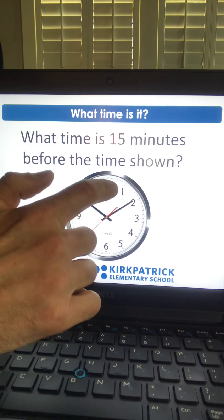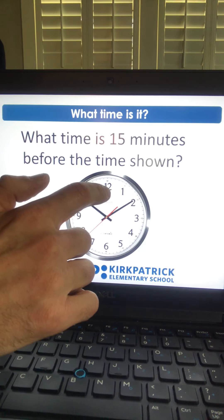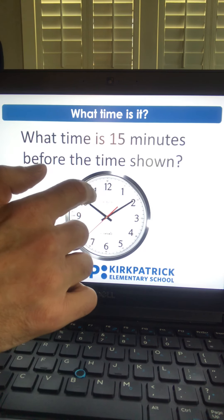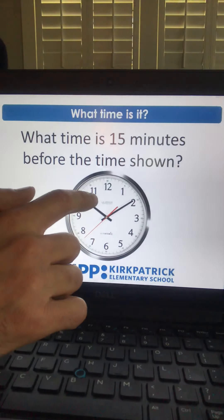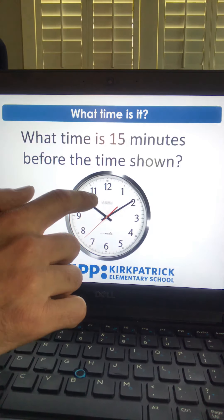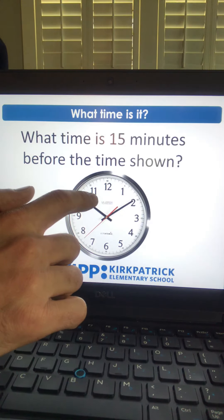So if I'm at 10:10 and I go back 5 minutes, I'm at 10:05. If I go back another 5 minutes, I'm at 10 o'clock. And if I go back another 5 minutes for 15 minutes like the problem said, now I'm at 9:55.